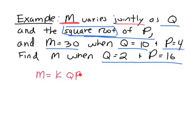So instead of writing P, I should have the square root of P. So M equals k times Q times the square root of P. M equals 30 when Q and P are these two numbers. So let's go ahead and use that information to find what k equals.